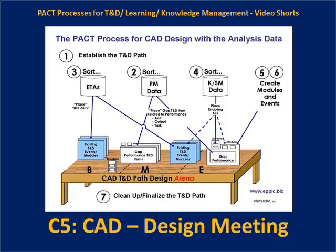Once all content is modularized into chapters, you accumulate those modules further into events. Starting at the beginning of the path, you determine which modules go into the first event, whether the second module also belongs in that event, and so on — accumulating content while adhering to proper sequencing.